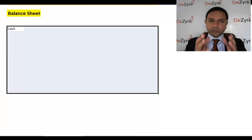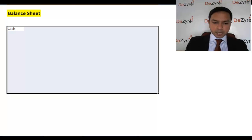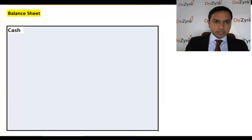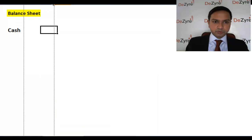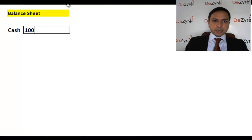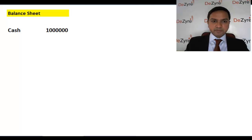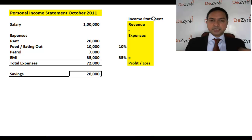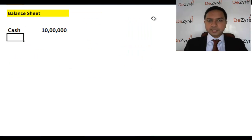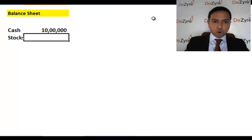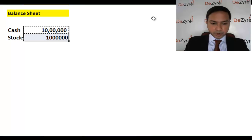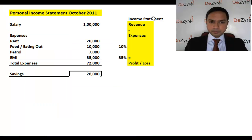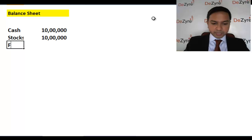Now, if you have to build a basic balance sheet for an individual, what would that look like? Very simply, you have cash in your bank account — let's say you've been saving well and you have 10 lakhs of cash in your bank account. Does the income statement capture this anywhere? No, there's no 10 lakhs here. Apart from that, you own stocks worth another 10 lakhs.